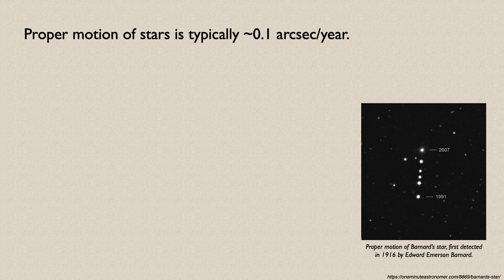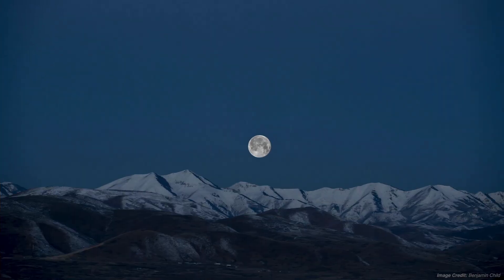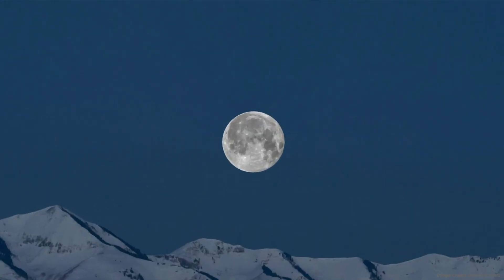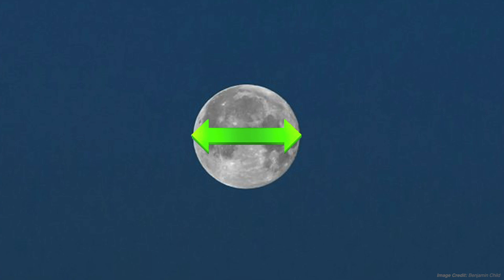On average, the proper motion of most stars is typically about 0.1 arc seconds per year. To give you a sense of scale, the full moon measures in at about 30 arc minutes in angular size.